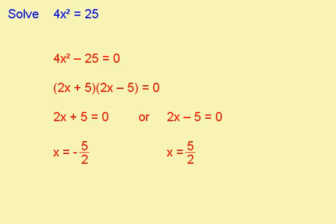To start this question, I need to rearrange my equation so that it's equal to 0, like this. I then spot that it's the difference of two squares, 2x plus 5, 2x minus 5.